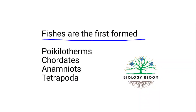Fishes are the first anamniotes. Anamniotes are vertebrates whose eggs do not have amniotic tissue or amniotic fluid. Fishes as well as amphibians are known as anamniotes — they don't have amniotic fluid in their eggs, and they require water for fertilization and lay eggs near water.